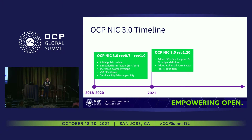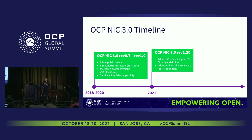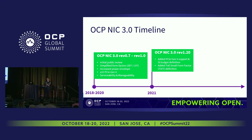A year later, we added capabilities to the spec in REF 1.2. It added PCIe Gen5 support in the same form factor, and also added information about the SI budget definition. Since we are in the small form factor, we could do slightly lower budget compared to PCIe channel insertion loss. To tackle challenges that come with higher speed, we introduced one more form factor — the tall small form factor — basically 2.7 millimeters taller, but the same X and Y dimensions.